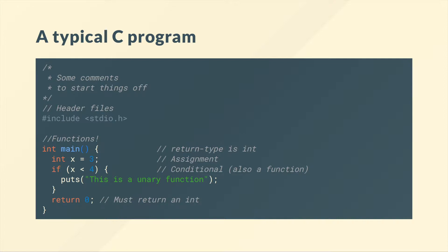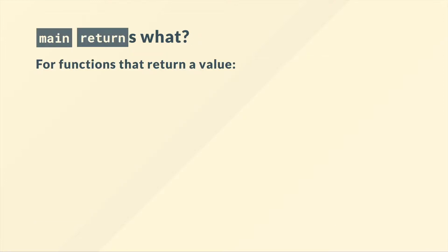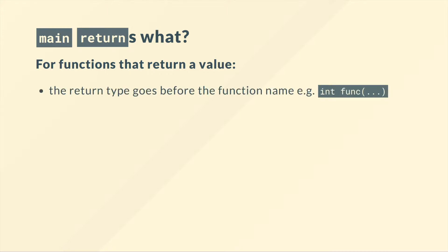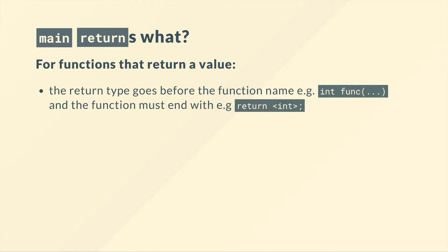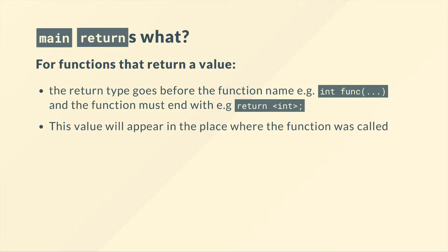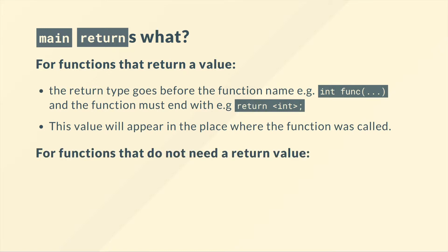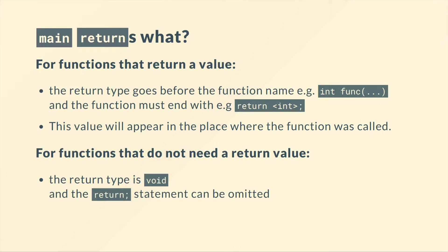C needs a main function because it needs a function to return back to. For functions that return a value, like main, we had it returning an integer. The return type goes before the function name — so we saw int main — and we must end the function with return something of type int. Often we don't need a return value for functions, in which case they're void. So instead of int we put void, and we can omit the return statement — if you don't include return, it is just implied return void.